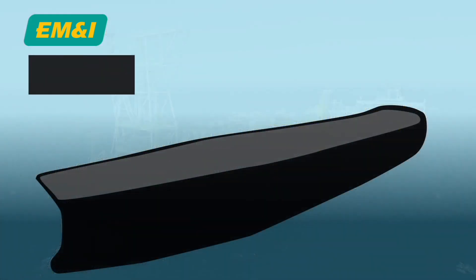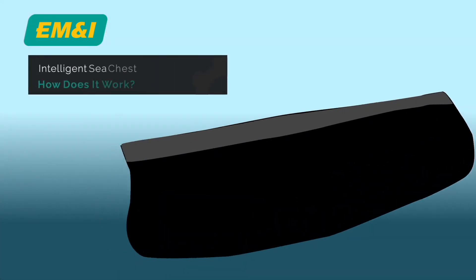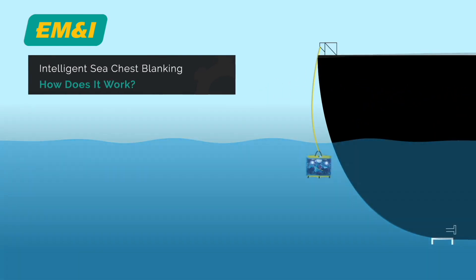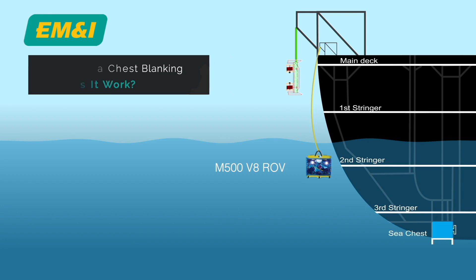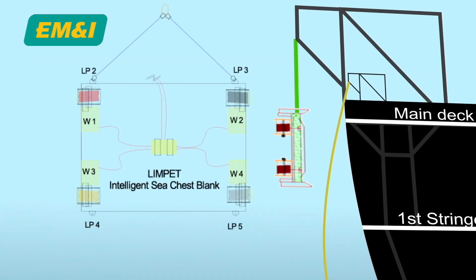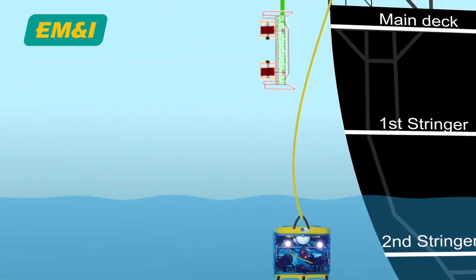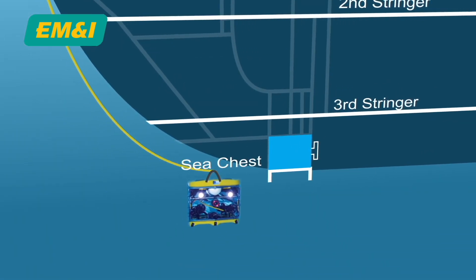So how does the Limpet Intelligent Sea Chest and Sea Tube Isolation and Blanking System work? The first stage of the process, prior to installing the Intelligent Sea Chest Blanks, a launch and retrieval system is set up for the blanks as well as the ROV. This is done by erecting a scaffold with an overhanging lifting beam and using a portable LARS launch davit for the ROV.